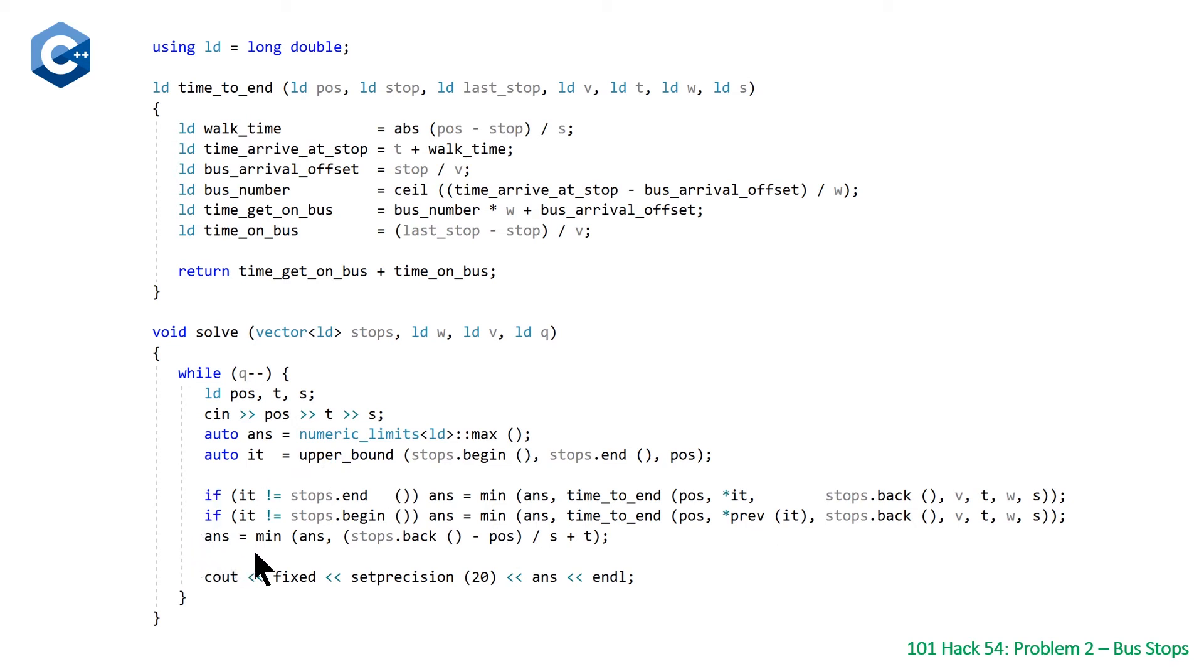Note we'll do that by using the prev function on our iterator from the upper bound call. And then our third calculation is going to be the time to walk to the end of the street without taking the bus. Three different numbers we're calculating, and each time we're setting the answer to be the minimum of the current value and the new calculated time to end.